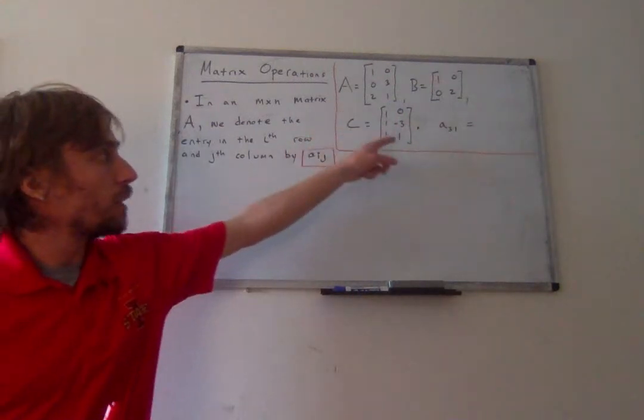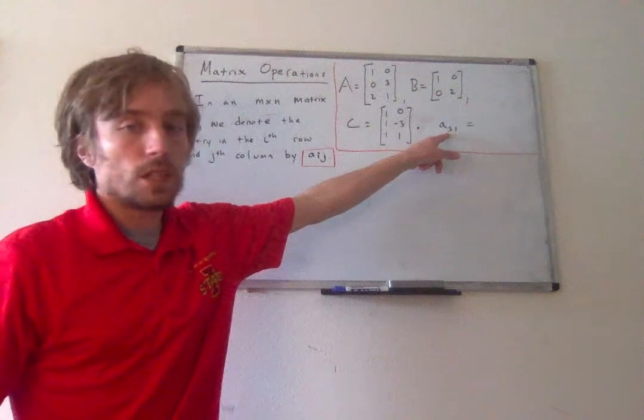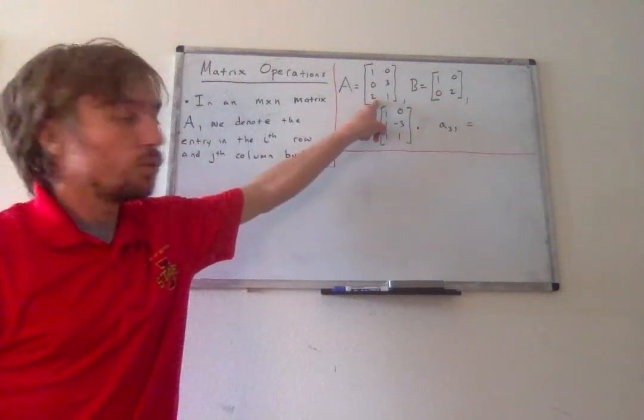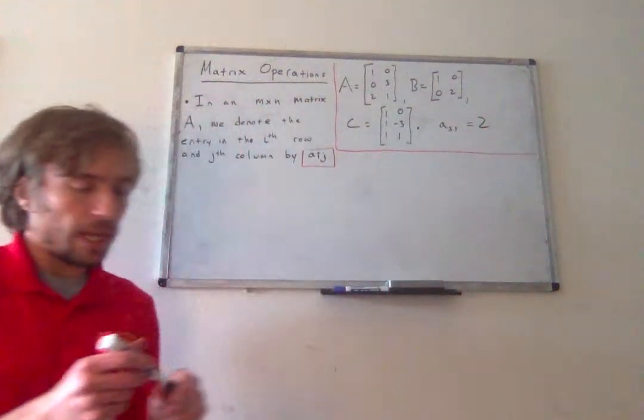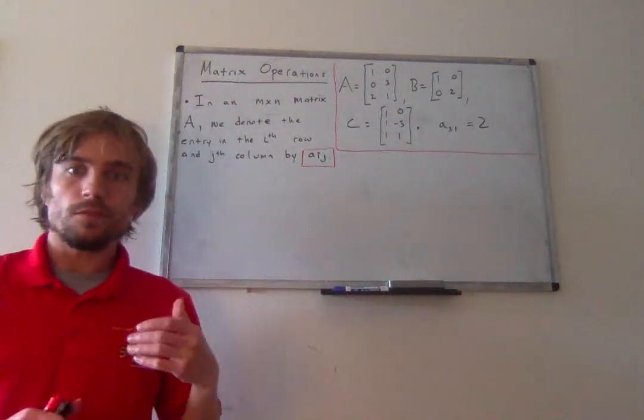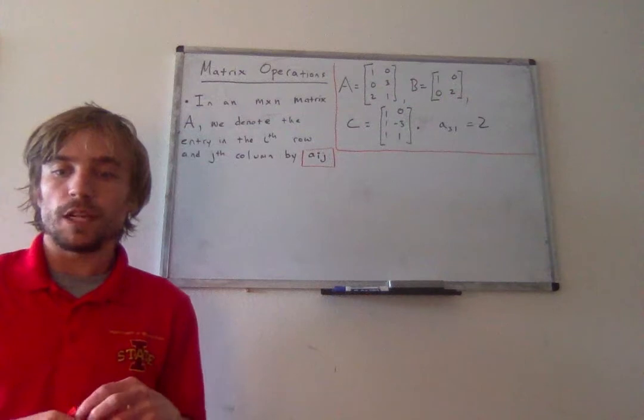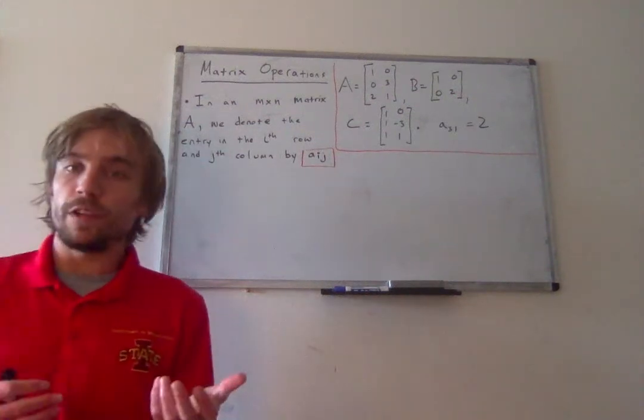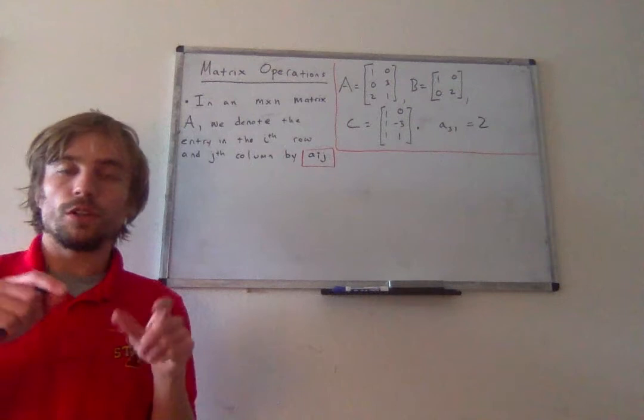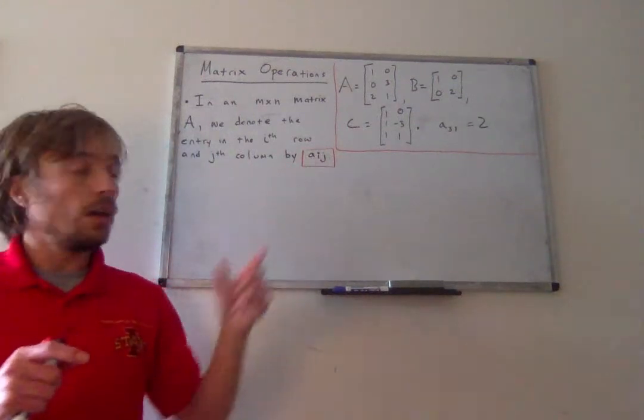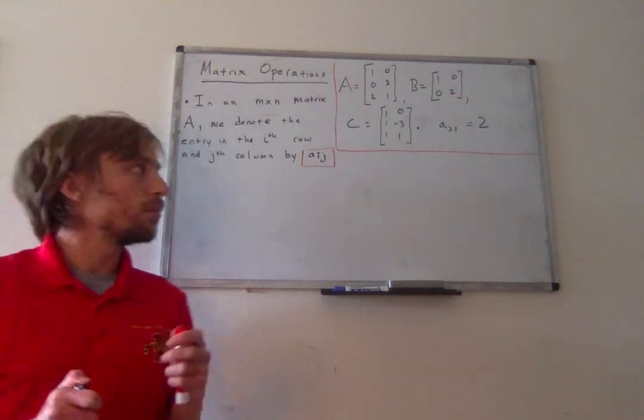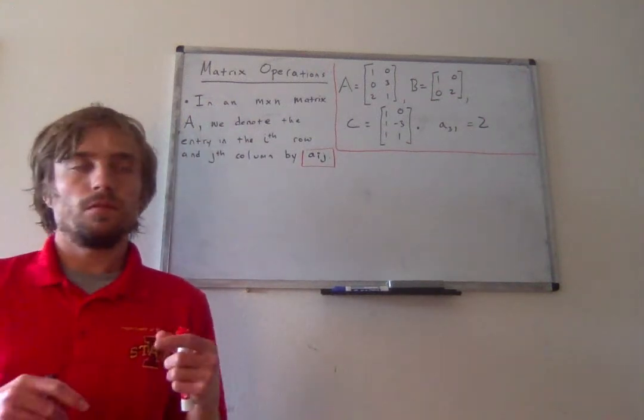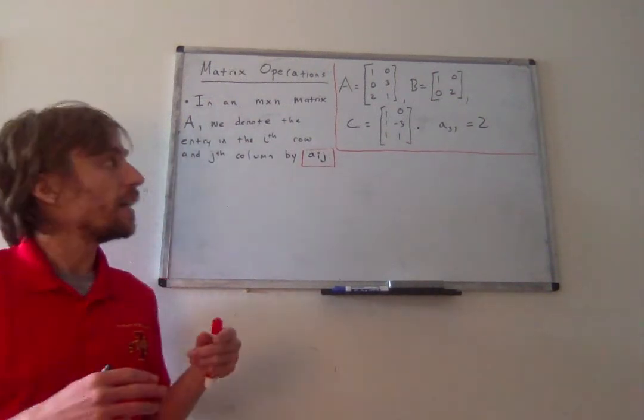So for example here, this would say the third row first column entry of matrix A, which would be 2. So it's just sort of a shorthand way we have of sort of calling on specific entries in matrices. These could be very useful for things like computer programming where you can quickly sort of encode all of the entries in a matrix in a much easier way than sort of saying the third row first column of A every single time.